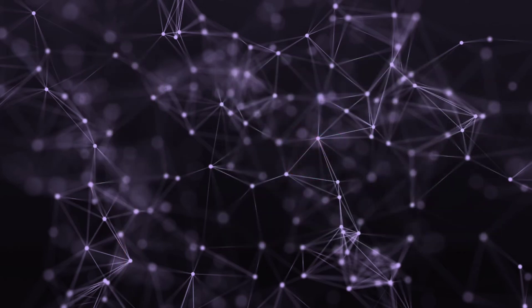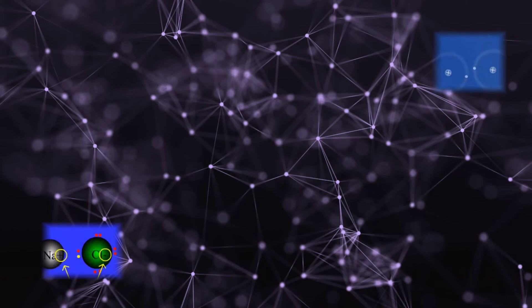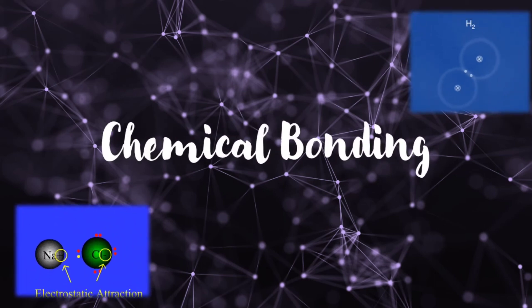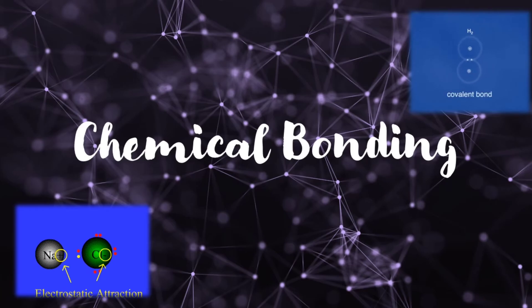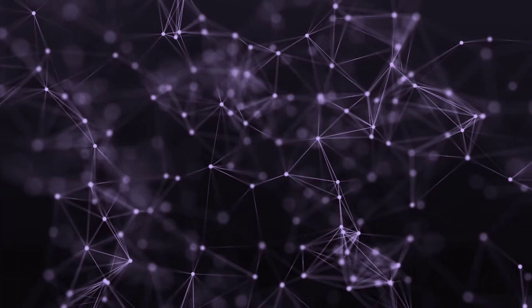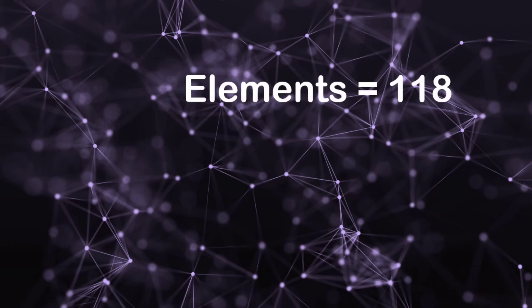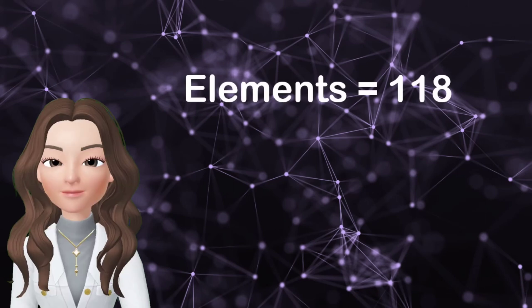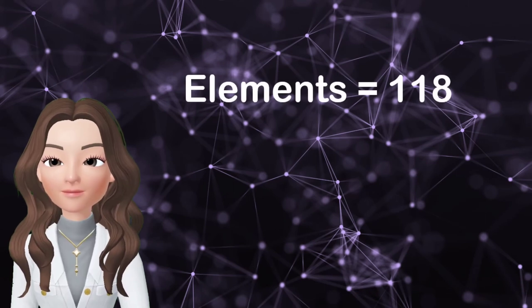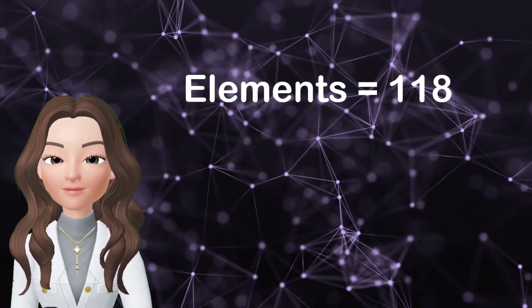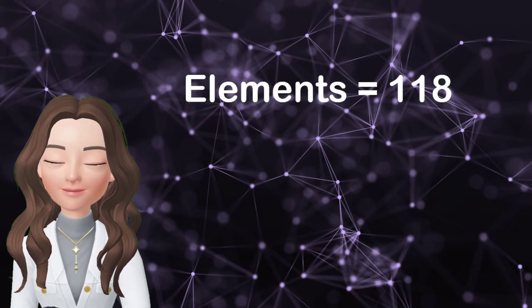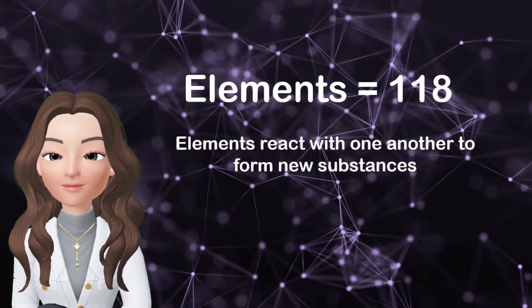For today's lesson, we're going to talk about how atoms become stable through chemical bonding. Talking about the elements, there are 118 known elements in our periodic table. But in reference to the substances existing here on Earth, there are even more than that number, because elements react with one another to form new substances.